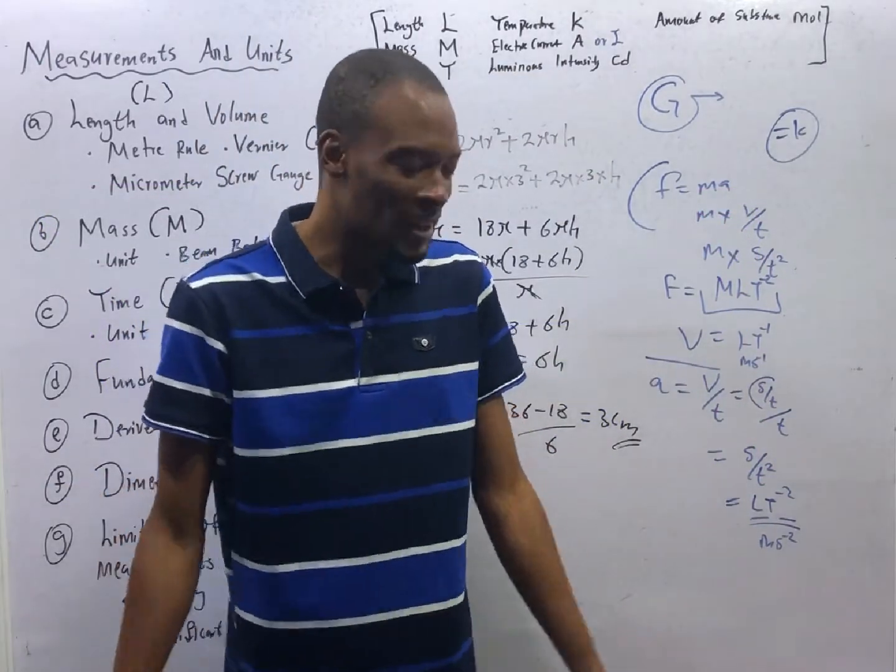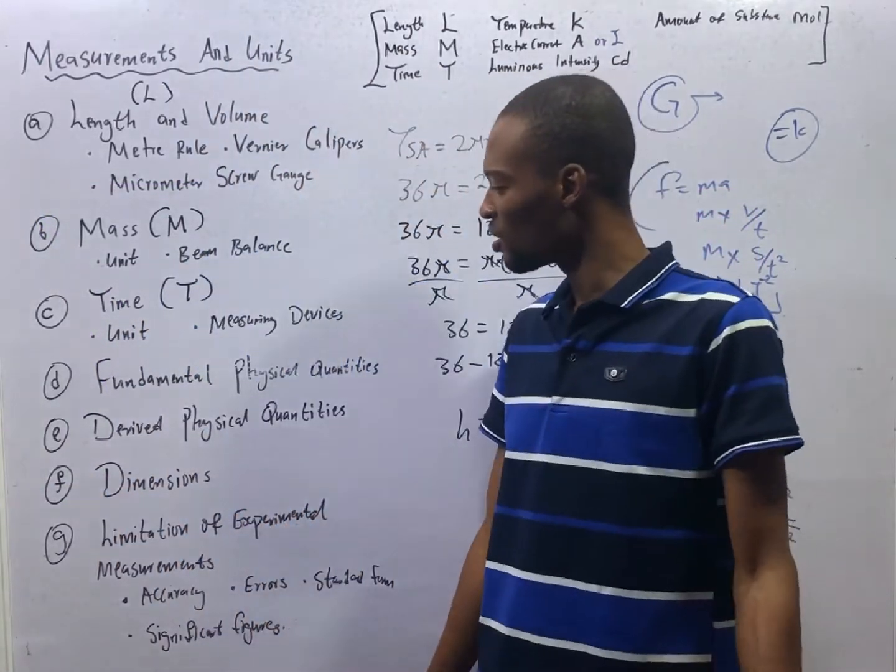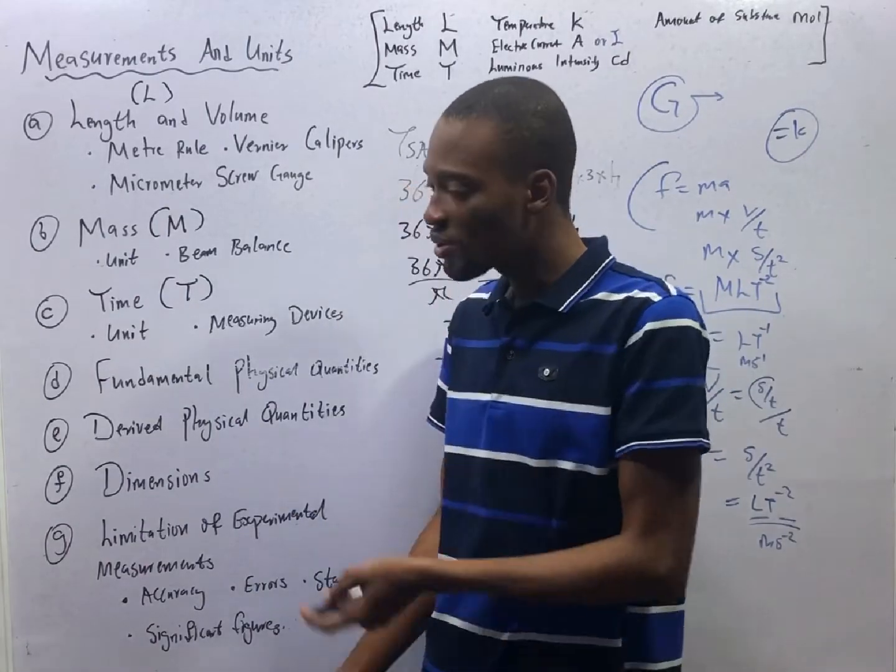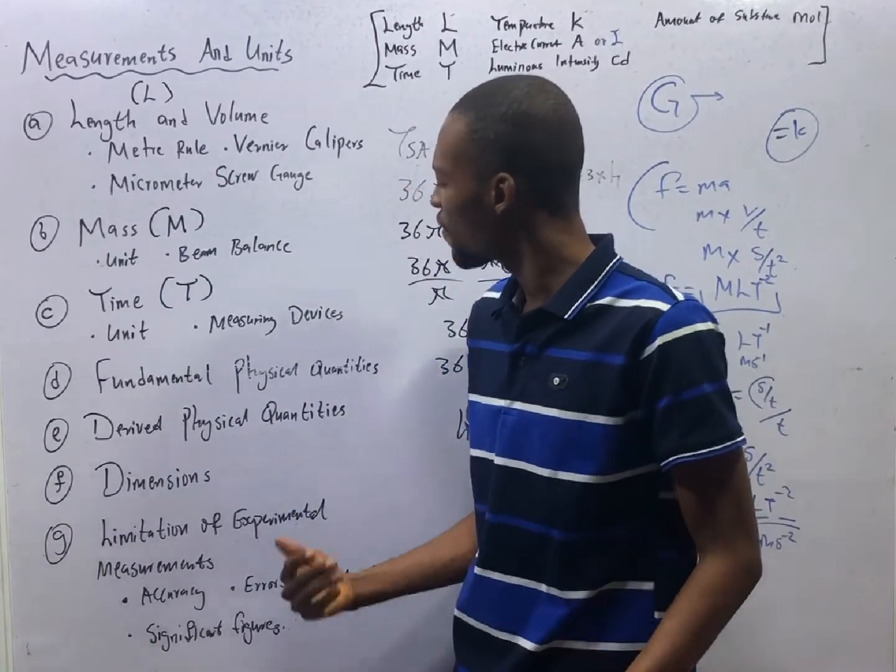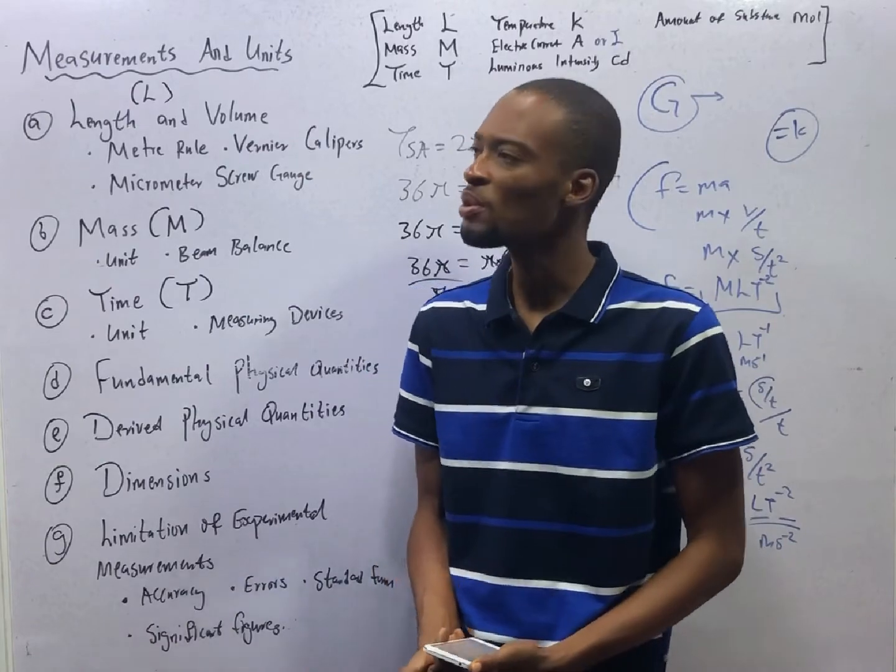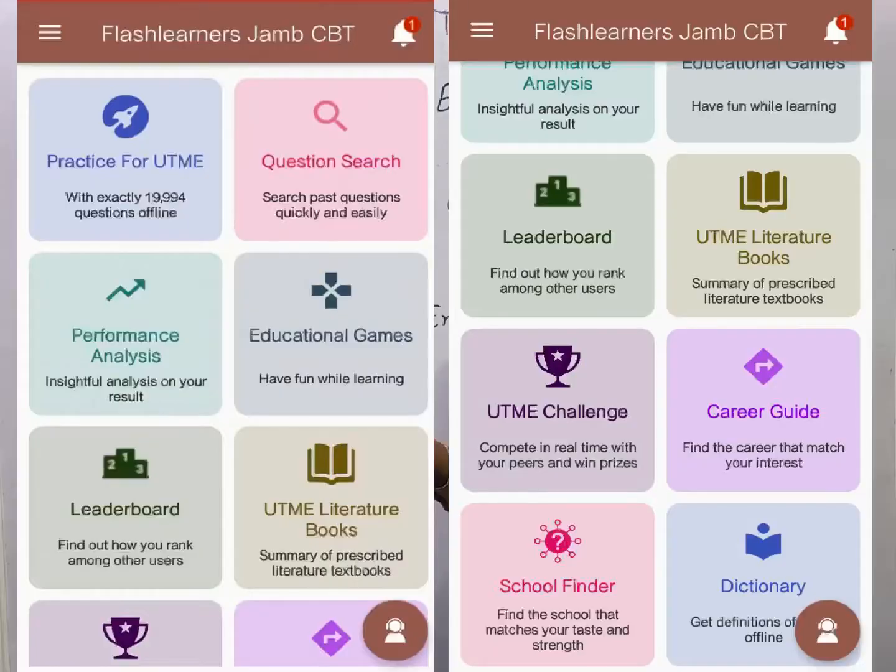So, ladies and gentlemen, we have answered a lot and a lot. With this, you should be good to go. Any questions you see from what I have taught you today, you should be able to answer them. And for your assignment, look for, open your Flash Channel Jam app, click on question search, type dimension, answer the questions, type derived quantities, answer the questions and a lot.